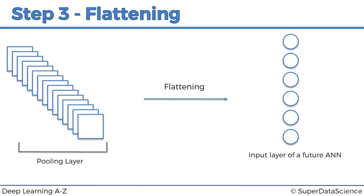So this is what it looks like when you have many pooling layers or pooled feature maps and then you flatten them. You put them into this one long column sequentially one after the other, and you get one huge vector of inputs for an artificial neural network.